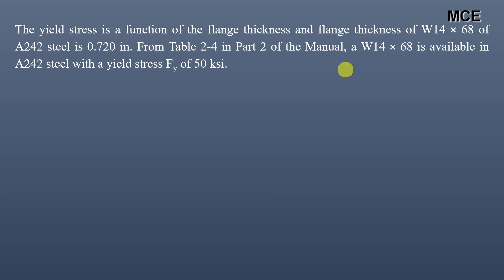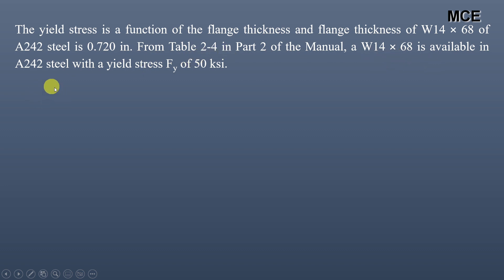In this question we are not directly given the yield stress of the steel. The yield stress is a function of the flange thickness. For our W14×68 with a flange thickness of 0.72 inch, we use Part 2 of the Steel Construction Manual. From Table 2-4, the W14×68 is available in A242 steel with a yield stress of 50 KSI. So for this question, we will assume a yield stress of 50 KSI and proceed accordingly.